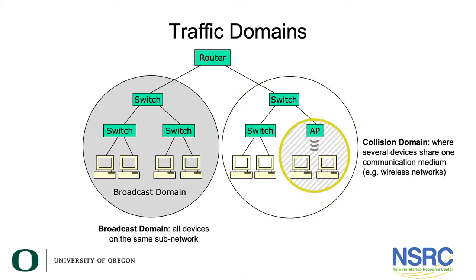On the right-hand side of this diagram there's another broadcast domain with switches, but there's also a collision domain. A collision domain is where devices at layer one share the same medium. In the old days this might have been a hub-based Ethernet network, but today the common example is access points. An access point with multiple devices forms a collision domain because at any instant only one device on that channel can transmit; all others must listen and take turns.